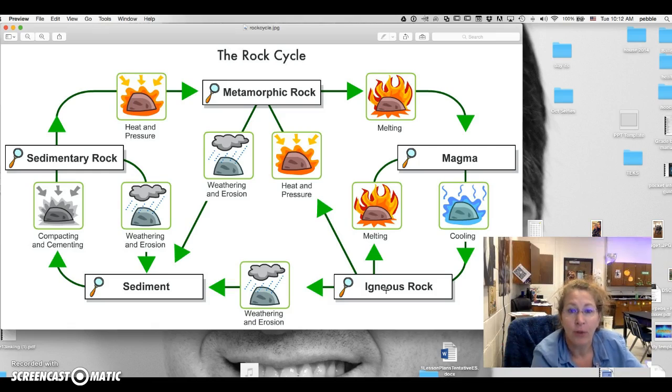Versus fine-grained would be like obsidian or something where you couldn't see the difference between the grains. You'd have to get a microscope. You couldn't see them with your naked eye. So igneous rocks: coarse-grained or fine-grained.